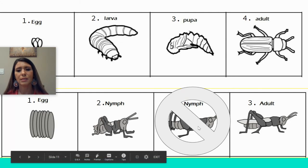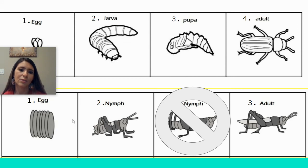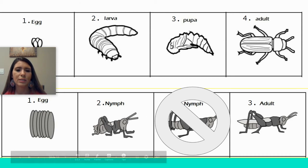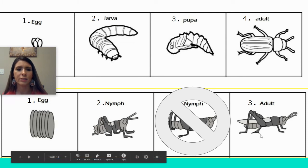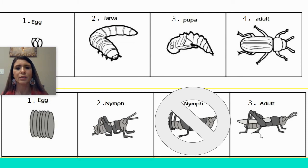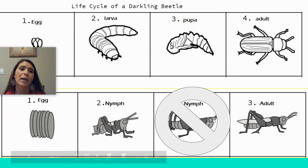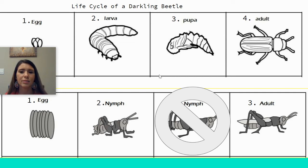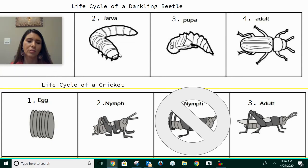This second stage labeled as a nymph is still a nymph, so it technically only has three stages. The second and third stage are not really too different, so we give this a very special name — we'll cover that at the very end of our discussion. The insect on top was a darkling beetle, and the insect on bottom was a cricket.